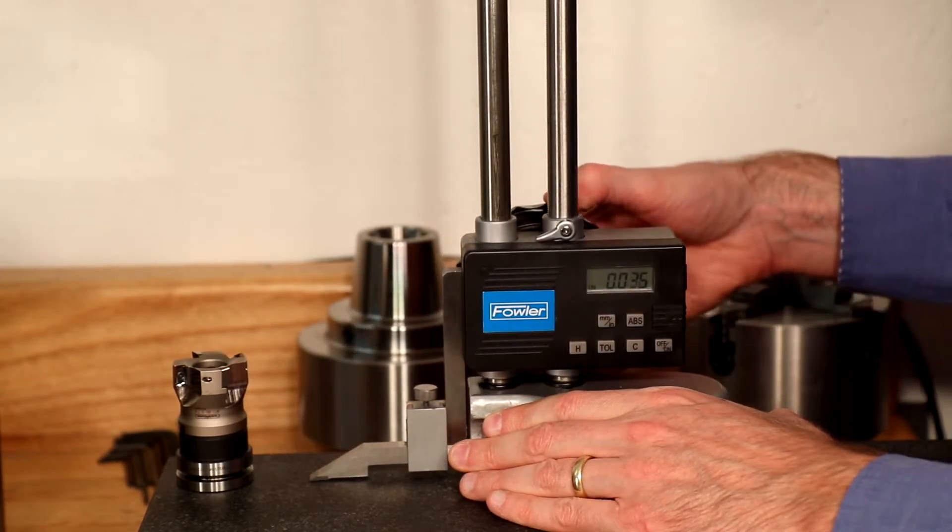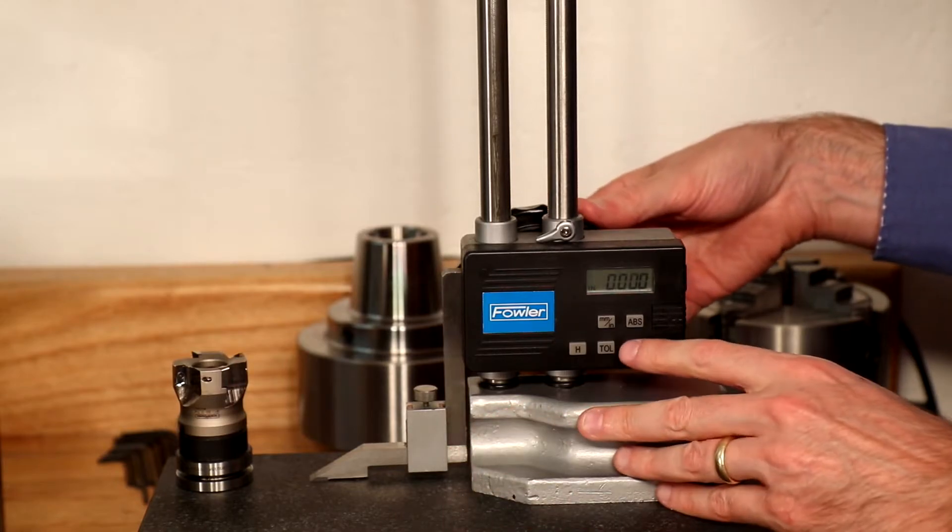However, the height gauge wheel has some amount of leverage and it's easy to lift the height gauge while zeroing.